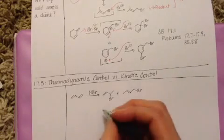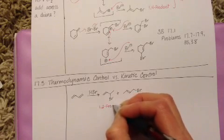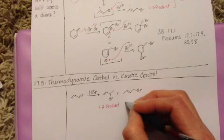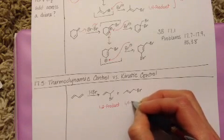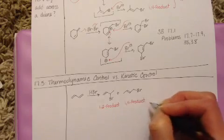we have two products. One of them is called the 1,2 product because HBr is adding to carbon number 1 and 2 of the 4-carbon system. Again, the numbers have absolutely nothing to do with the IUPAC numbering system for nomenclature.